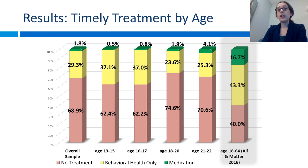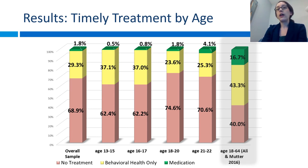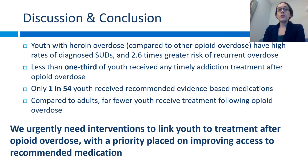Comparing to adults: in a similar study, after adults had an overdose, 16% received medications within a month and 43% had behavioral health services, meaning only 40% of adults were not receiving any sort of treatment after their overdose — compared to the youth in my study where 68.9% received nothing. Youth with heroin overdose had high rates of diagnosed substance use disorders and 2.6 times greater risk of recurrent overdose. Unfortunately, less than one-third of youth received any timely addiction treatment after opioid overdose, and only 1 in 54 youth received the recommended evidence-based medications. Compared to adults, far fewer youth received treatment.